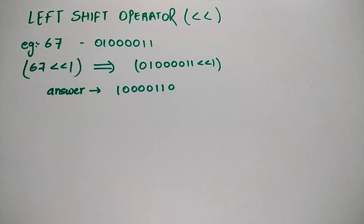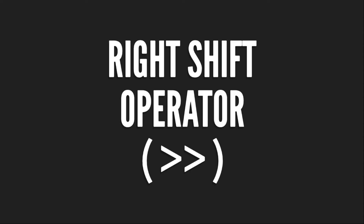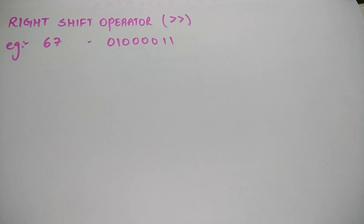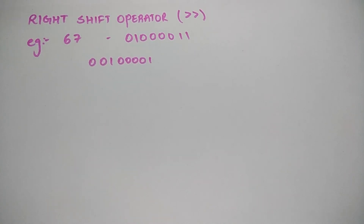Moving towards the right shift operator — you can see its symbol in the bracket, which is used in embedded programming. The right shift operator actually shifts the binary towards the right. Taking the same example of 67, after shifting: 1 bit is released from the right-hand side and 1 bit of value 0 is introduced on the left-hand side. After the shift, you can see on screen that 0 is introduced on the left and the LSB 1 is released, so it is shifted towards the right.